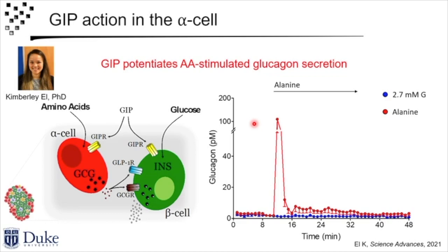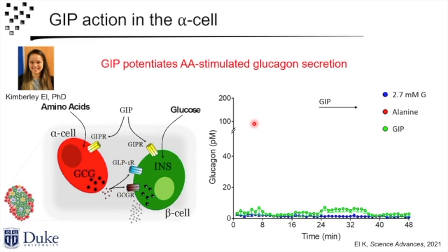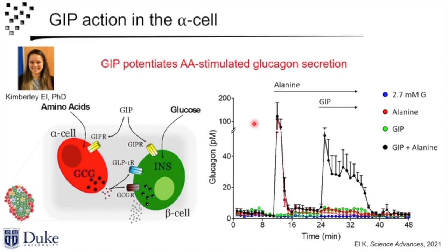Kim had a really neat idea. She was learning about incretins — how they potentiate glucose-stimulated insulin secretion and don't stimulate insulin when glucose is low because they need the activated beta cell — and she said: maybe GIP, whose receptor is expressed on the alpha cell, potentiates nutrient-stimulated glucagon secretion. The nutrient for alpha cells is amino acids. So she asked: can GIP potentiate amino acid-stimulated glucagon secretion? Using alanine, we see a biphasic glucagon response. GIP alone has a small effect. But look what happens when you give them together — there is a synergistic activity for GIP to potentiate alanine-stimulated glucagon secretion.